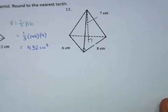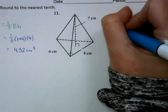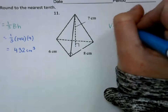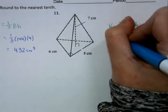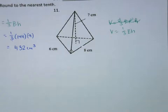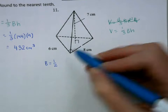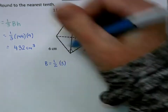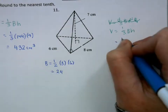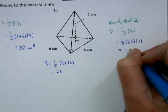The next pyramid uses the same formula: one third base times height. The base is a triangle, so it's one half times base times height. We have a right angle here, so the base is 8 and the height is 6, giving an area of 24. The height of the pyramid is 7, which gives us a volume of 56 centimeters cubed.